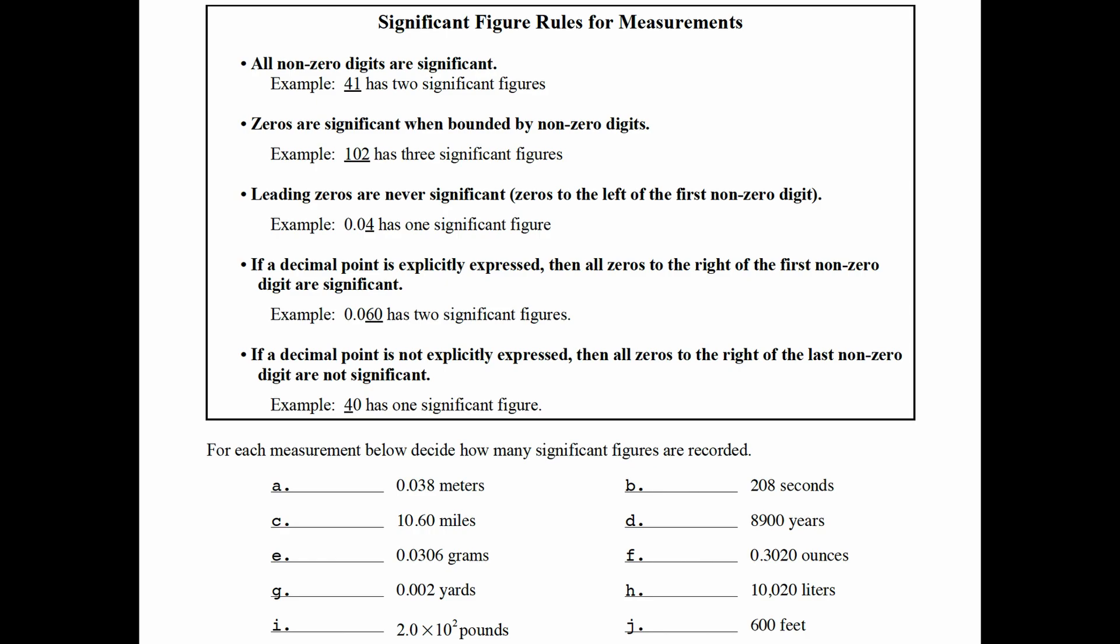Next rule is if a decimal point is explicitly expressed, then all zeros to the right of the first nonzero digit are automatically significant. Check out the example 0.060. That has two significant figures where the trailing zero there is significant. It's to the right of a nonzero digit and the decimal point had been expressed.